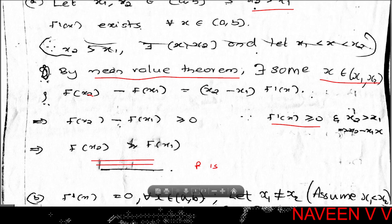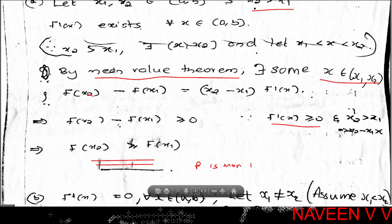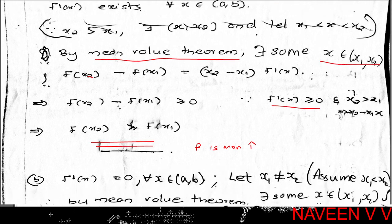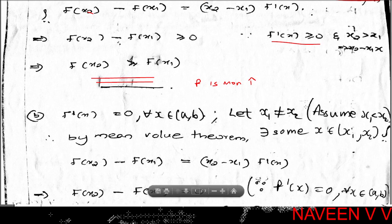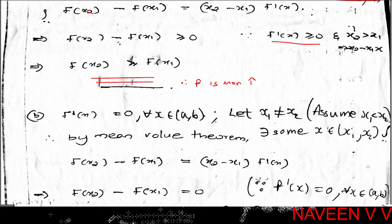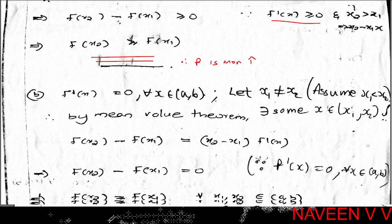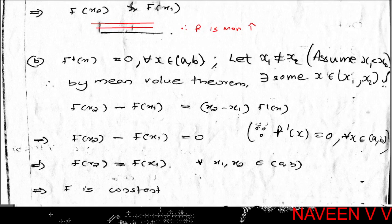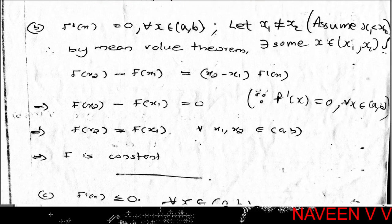Therefore, f is monotonically increasing on open interval (a, b). This completes the proof of part one: f'(x) ≥ 0 for all x in (a, b) implies f is monotonically increasing. Now we prove the second part: if f'(x) = 0 for all x in (a, b), then f is constant.